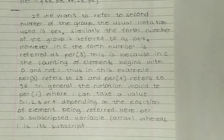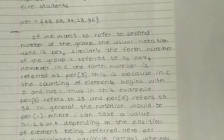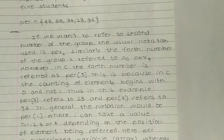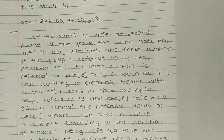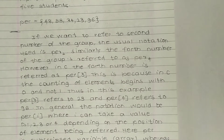If we want to refer to the second number of a group, the usual notation used is per[2]. We were discussing an array called 'per' in which five elements were there. So if we want to refer to the second number, that is 88, the usual notation used is per[2]. Similarly, the fourth number of the group is referred to as per[4], so the fourth number is 23.